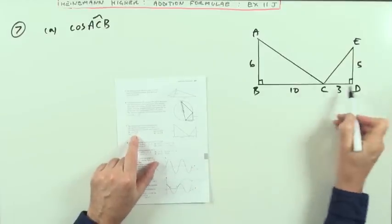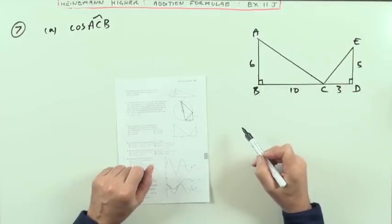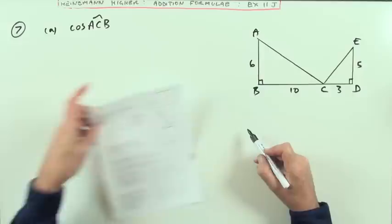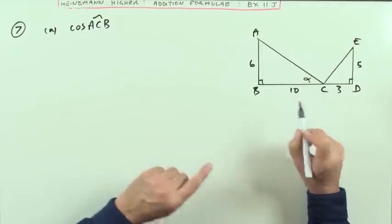So for question 7, I've got this diagram here, assuming that those are right-angled triangles. Find the exact values of these various cosines and sines of angles in this diagram. First one is ACB, A to C to B. I'll call that alpha just now. I'm not going to use it in this part. This is for reference later.